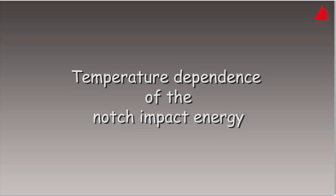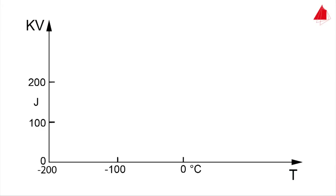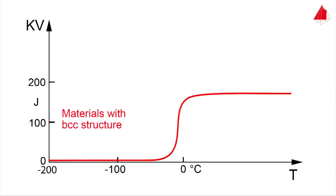The Charpy impact test is not only carried out at room temperature. Materials with body-centred cubic crystal structure, such as plain carbon steels, show a characteristic S-shaped curve of the impact energy versus temperature. In the so-called upper shelf region, the material absorbs a lot of energy and behaves in a tough manner. At low temperatures, in the lower shelf region, only a small amount of impact energy is absorbed and brittle fractures occur.